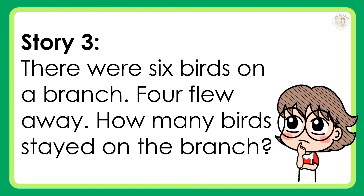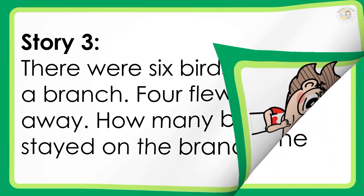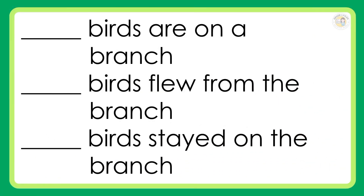Story 3: There were six birds on a branch. Four flew away. How many birds stayed on the branch? Birds are on a branch. Birds flew from the branch. Birds stayed on the branch.